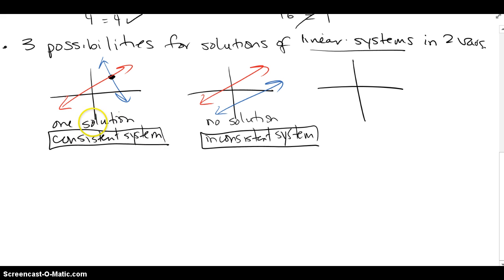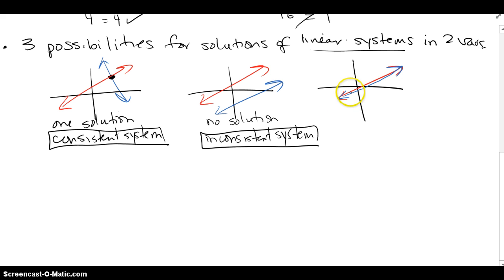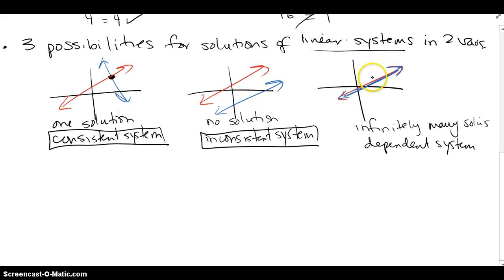Or a consistent system — they only meet in one place and have one solution. The only other thing that could happen is you graph your first line, and your second line happens to be not only parallel to the first one but exactly on top of it. Both lines are the exact same line, giving infinitely many solutions. All the ordered pairs they have, they both share in common — this is known as a dependent system. So the three options are: one solution, no solution, or infinitely many solutions.